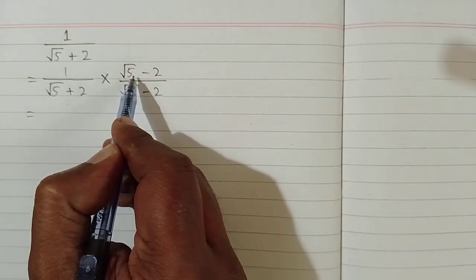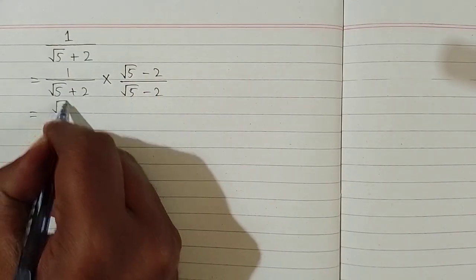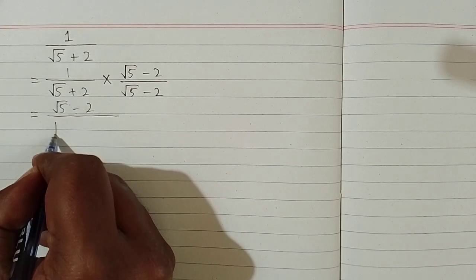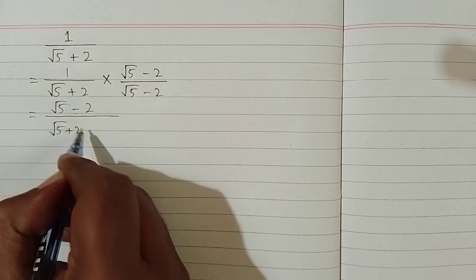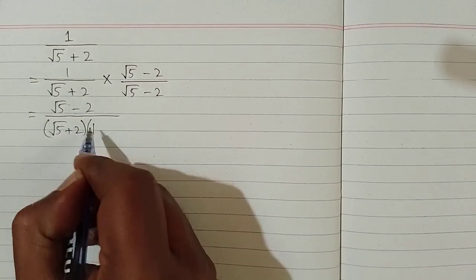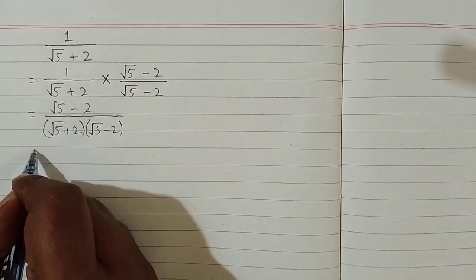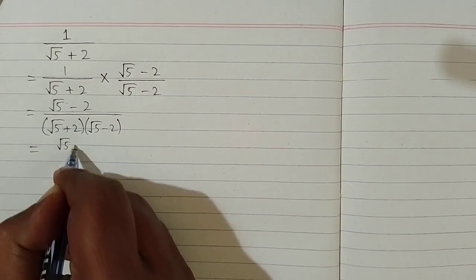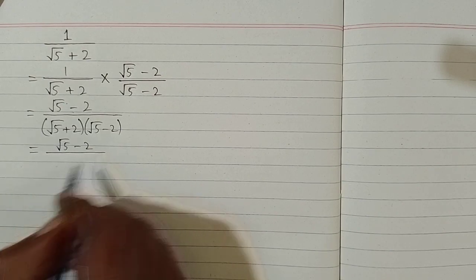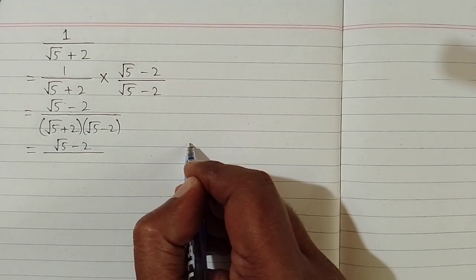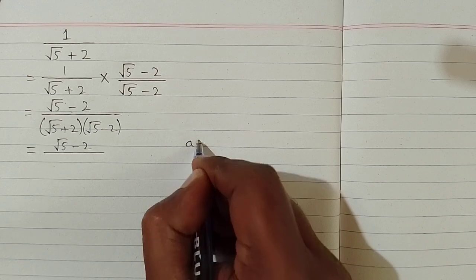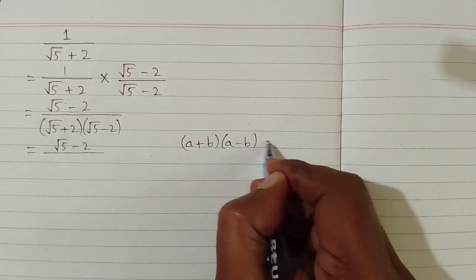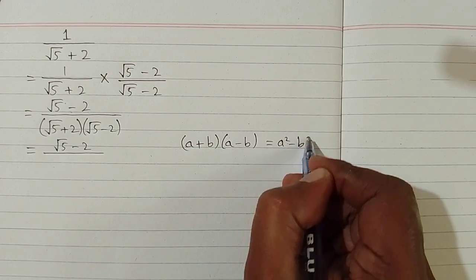So 1 multiplied by square root of 5 minus 2 is square root of 5 minus 2, upon square root of 5 plus 2 multiplied by square root of 5 minus 2. In the denominator we can apply the formula that a plus b multiplied by a minus b is equal to a squared minus b squared.